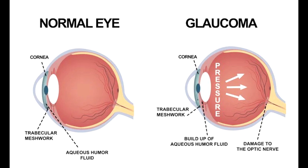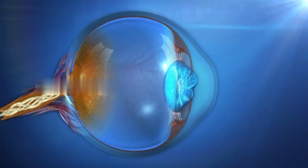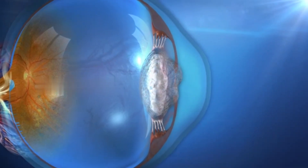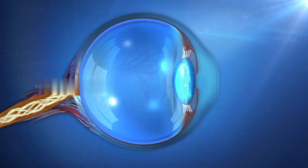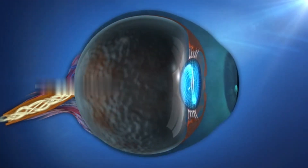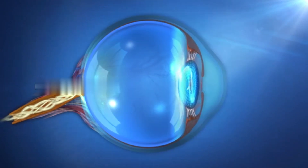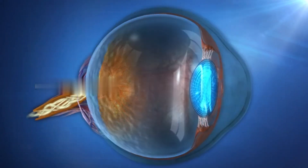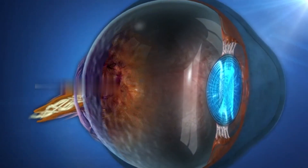Glaucoma is a group of diseases that are the leading cause of blindness in the world. Glaucoma usually happens when the fluid pressure inside the eyes slowly rises and damages the optic nerve.